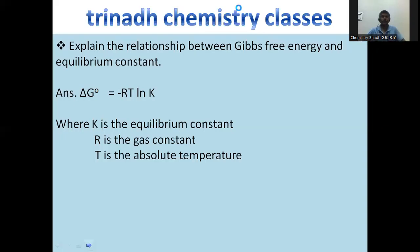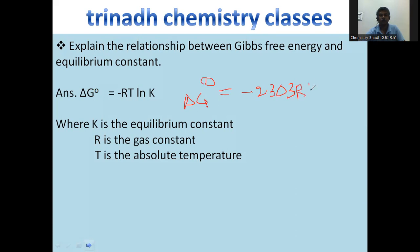Next: explain the relationship between Gibbs free energy and equilibrium constant. ΔG° = −RT ln K, where R is the gas constant, T is the temperature, and K is the equilibrium constant. This can also be written as: ΔG° = −2.303 RT log K (base 10).